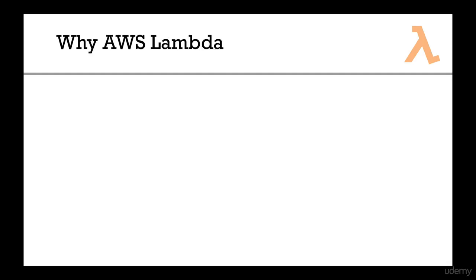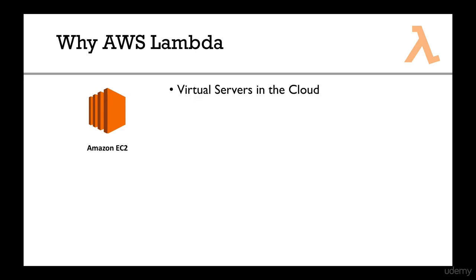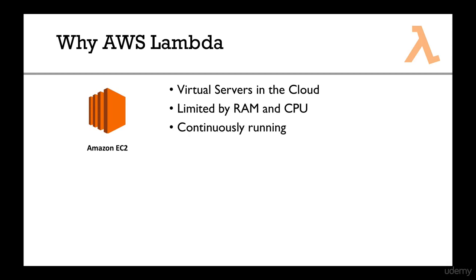So what is AWS Lambda? We had servers, and that service for AWS is called EC2. You basically rent virtual servers in the cloud. You say, I want two gigabytes of RAM and this type of CPU, and they give it to you. The instance is continuously running — you can stop or start it whenever you want, but once it's started it's just running. And you get billed by the hour, so even if you stop it quickly, you still get billed for one hour.